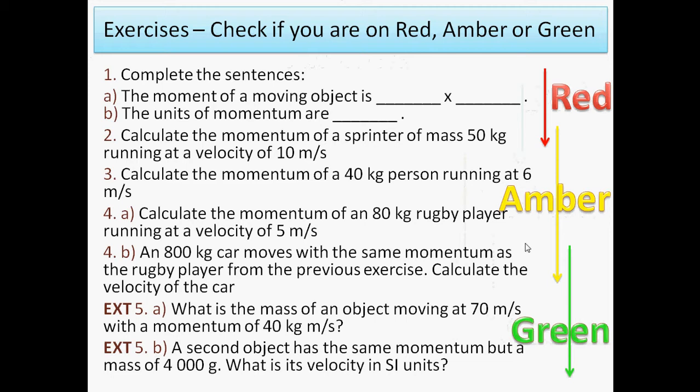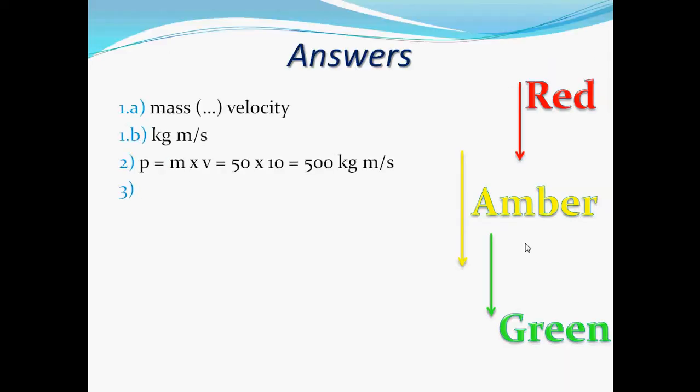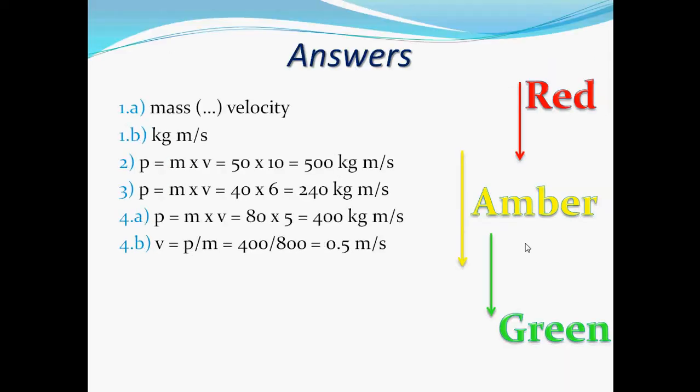An 800 kilogram car moves with the same momentum as the rugby player from the previous exercise. Calculate the velocity of the car. Now I have a car, something that has a bigger mass but the same momentum. So if it has a bigger mass, it must have a smaller velocity to have the same momentum. So velocity will be momentum over mass, so that's going to be 400 divided by 800, so that gives me 0.5 meters per second. And as we predicted, it had to have a smaller velocity to have the same momentum since the mass was larger.